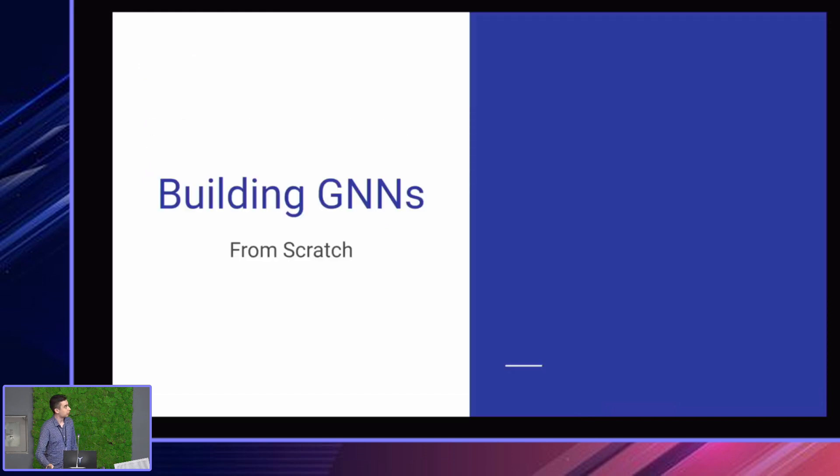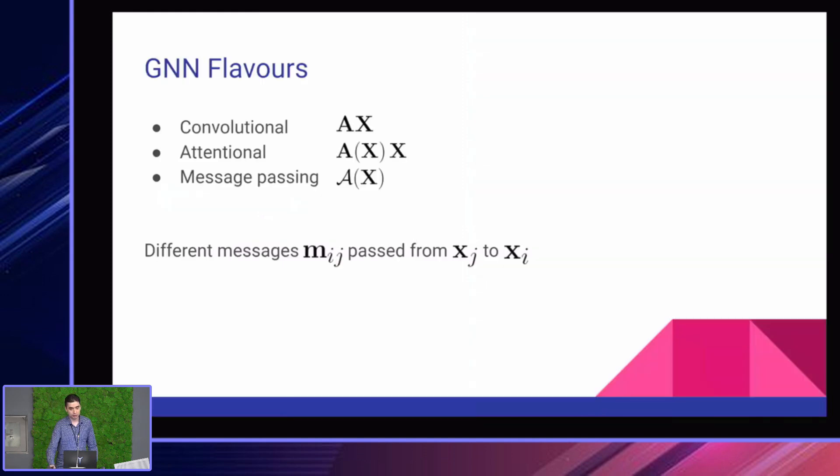But first thing is first, so we're building GNNs from scratch. And to start, we'll just recap some theory from yesterday's lecture. So the main paradigm about GNNs is that we have these messages, M_IJ, that are being sent from node J with embeddings X_J to node I with embeddings X_I. And depending on how we construct these messages, we end up with different flavors of GNNs, such as convolutional, attentional, or message passing in increasing order of complexity.